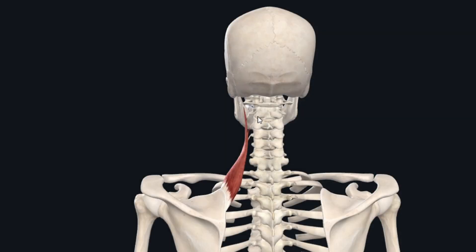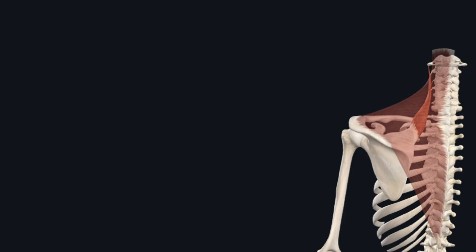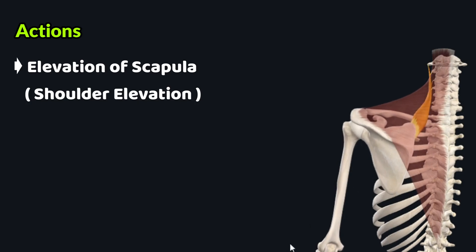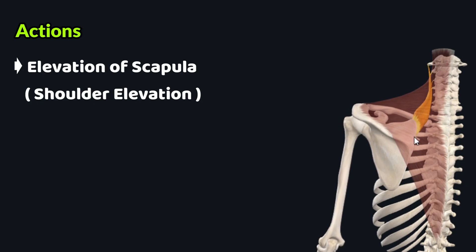To discuss the actions of the levator scapulae muscle, we focus on its origin and insertion points, as this muscle mainly performs its actions through these points. An important action is the elevation of the scapula, also known as shoulder elevation. When this muscle contracts, it acts on the medial border of the scapula through its insertion and elevates the scapula.